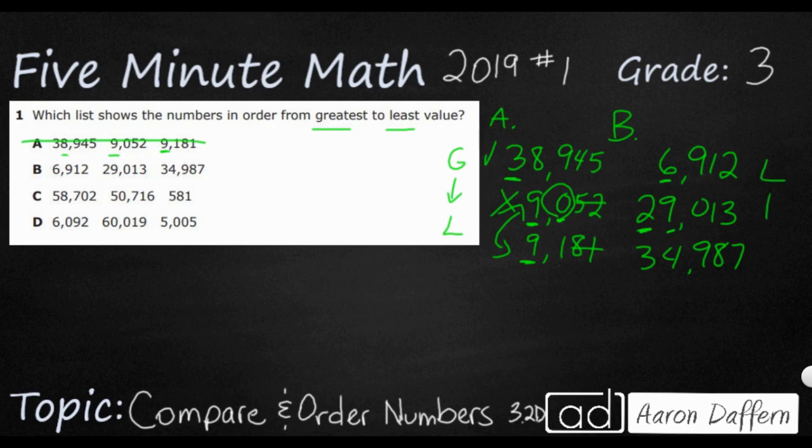This list is perfect if I was going from least to greatest. Because this number only starts at the, goes to the thousands place. So that's the smallest. And then 29,000 is less than 34,000. So this is great, but it's the wrong order. It's least to greatest, not greatest to least. So that's the trick on that one.